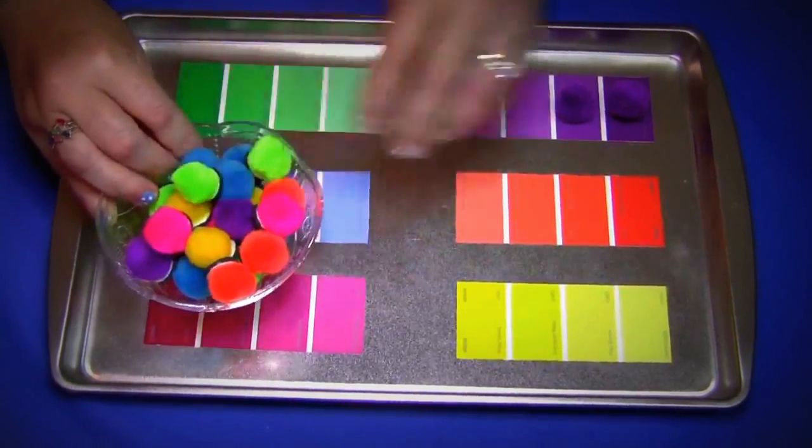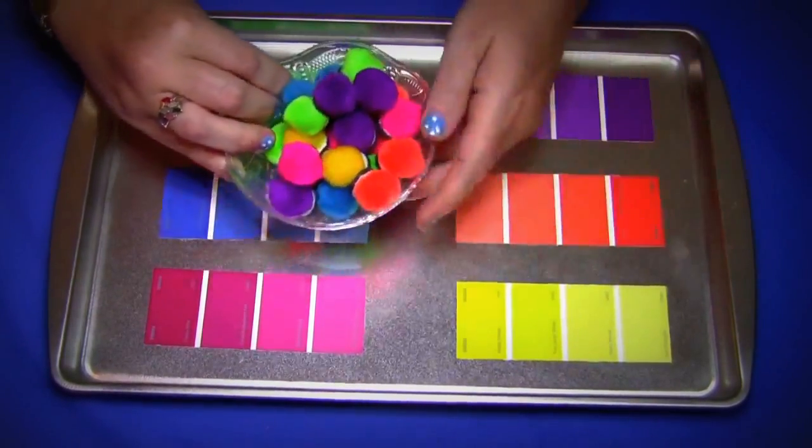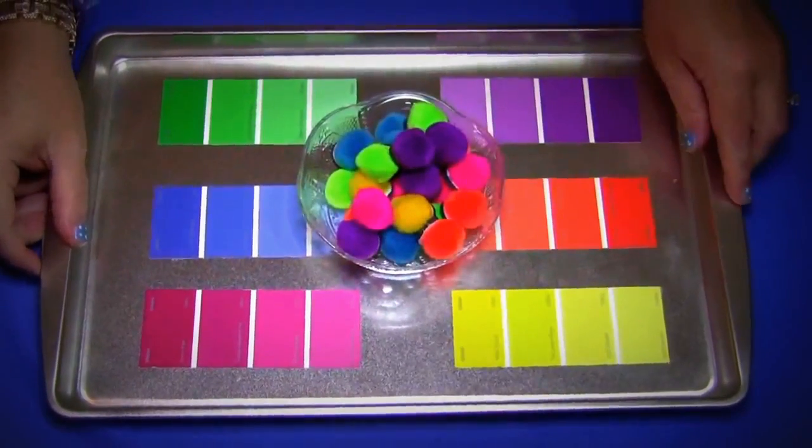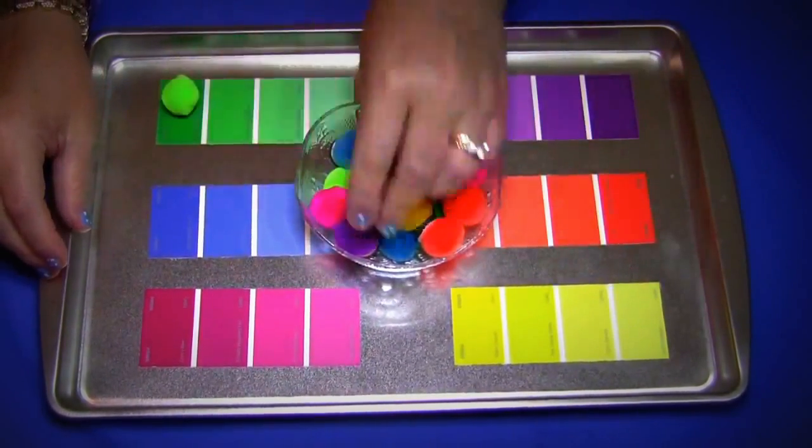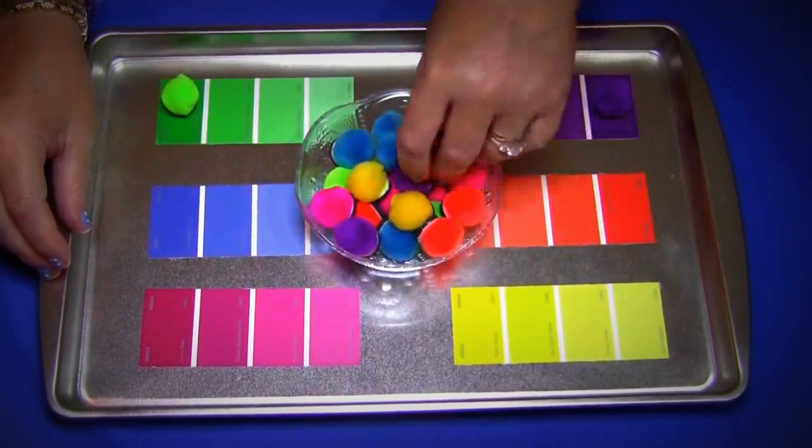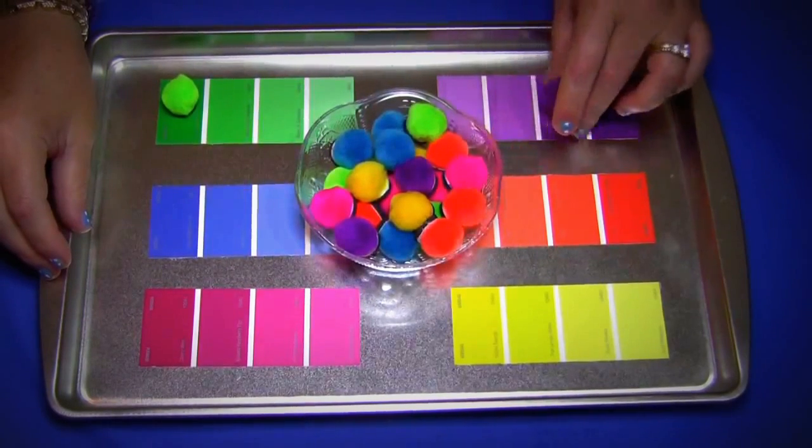So we'll do that quick. We'll just put a couple on. I'm sure you can get the idea. They would come and sit down, figure out where it goes and then set it down. I do four color strips with four pom-poms each.